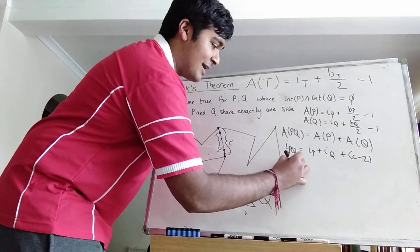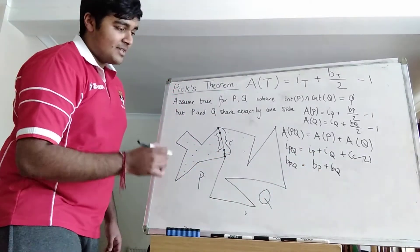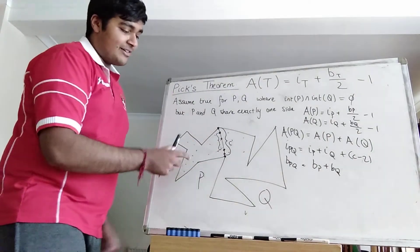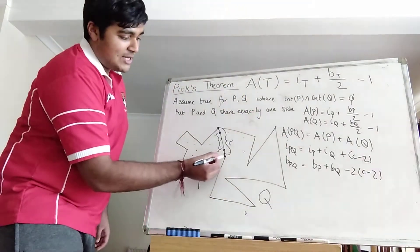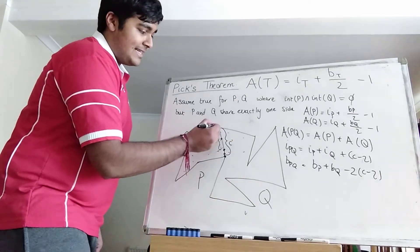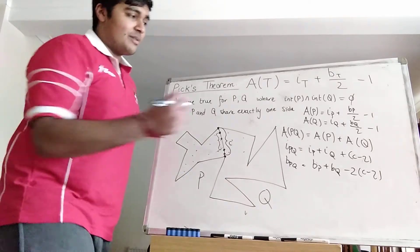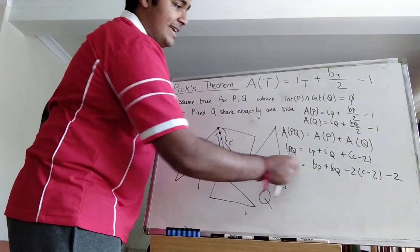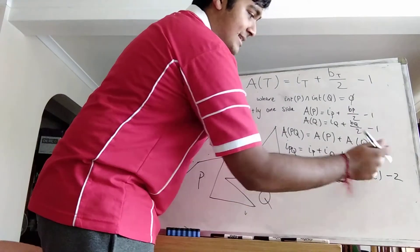Now let's work out the number of boundary points of PQ. We get B(P) plus B(Q), but there's some double counting. First, the C minus 2 middle points on the shared side are no longer boundary points, so I subtract two lots of C minus 2 — one for P and one for Q. Also, the two endpoints of the shared side are boundary points but have been double counted, so I subtract another 2. Dividing everything by 2 gives B(PQ)/2 equals B(P)/2 plus B(Q)/2 minus (C minus 2) minus 1.